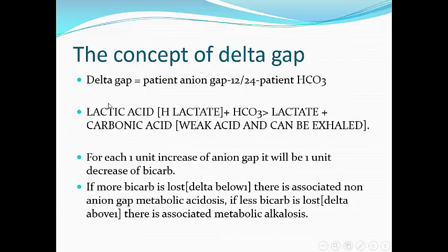Back to the simple concept: endogenous lactic acid reacts with bicarbonate, producing one lactate anion and carbonic acid which is exhaled. From this reaction, for each bicarbonate consumed, one anion is produced. This is the normal relationship in high anion gap metabolic acidosis: one bicarbonate molecule consumed and one lactate molecule produced.